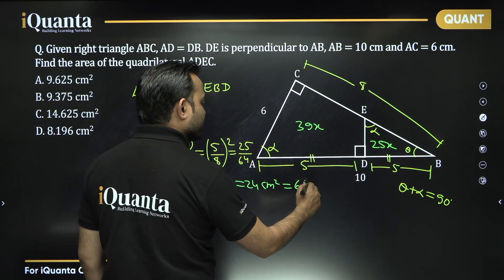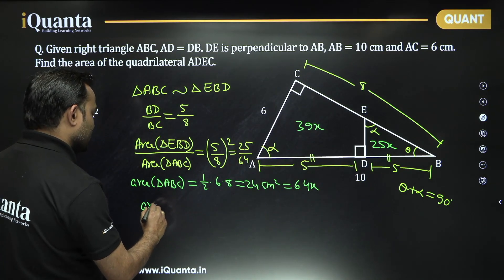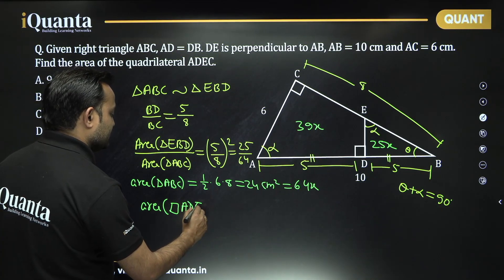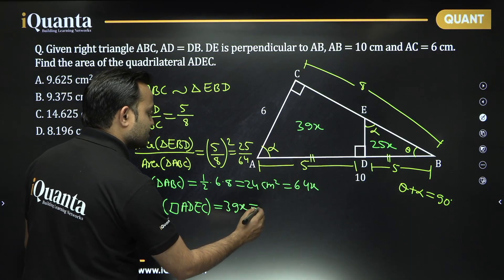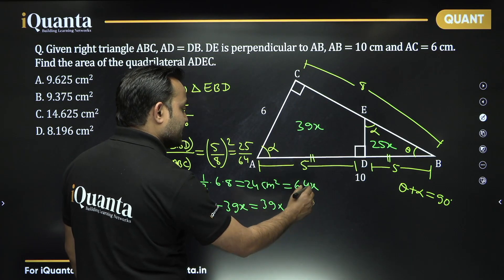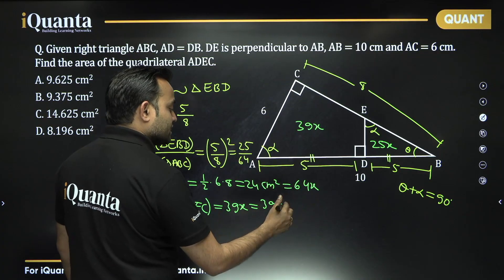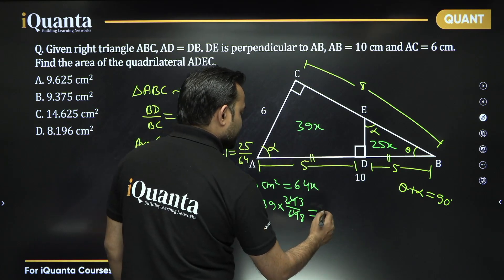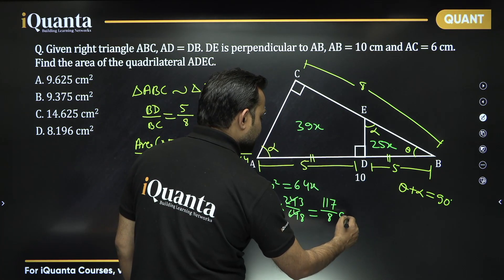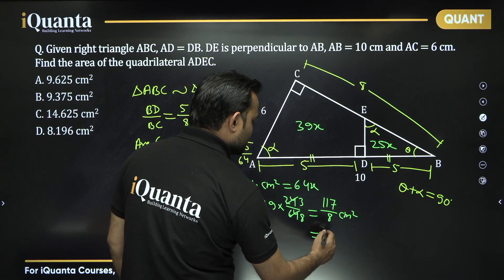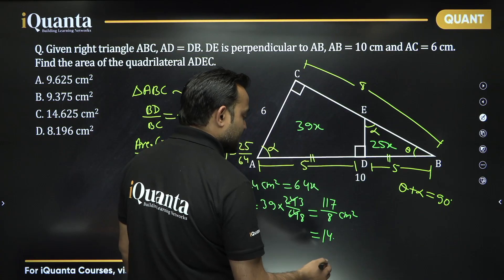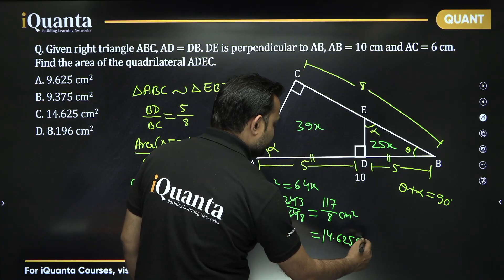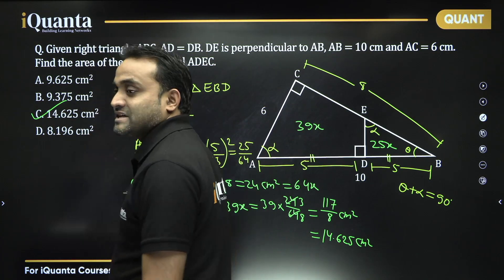The area of triangle EBD divided by area of triangle ABC equals the square of the ratio of corresponding sides, which is 25 upon 64. Taking area of triangle EBD as 25x, the area of quadrilateral ADEC is 39x, since 25 plus 39 equals 64. Area of triangle ABC equals half times 6 times 8 equals 24 centimeter squared, which is 64x. So x equals 24 by 64, and the area of quadrilateral ADEC equals 39 times 24 by 64, giving 117 upon 8, approximately 14.625 centimeter squared.